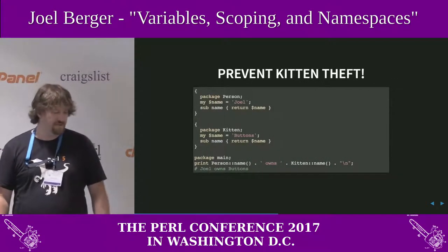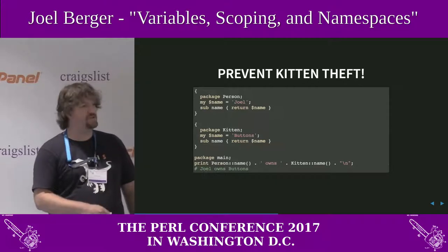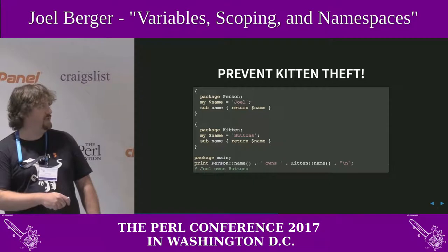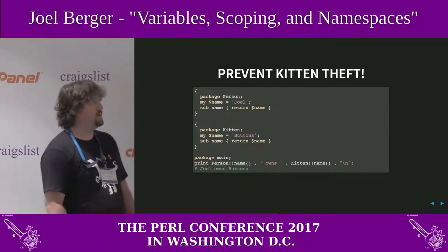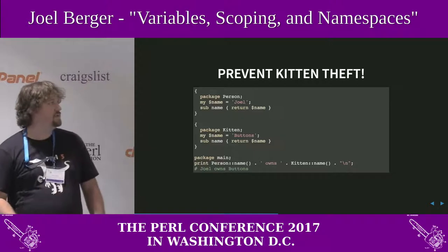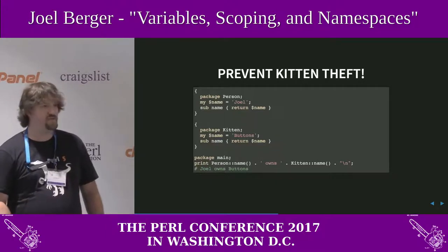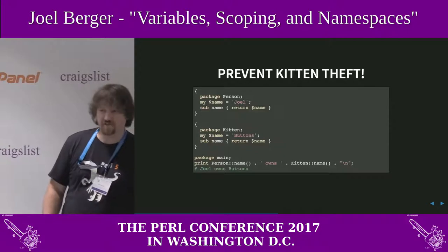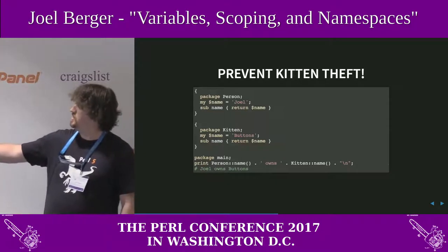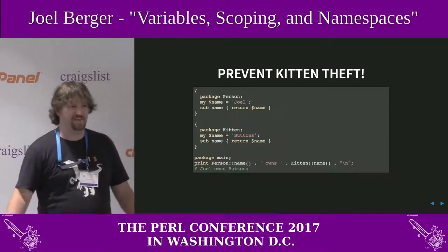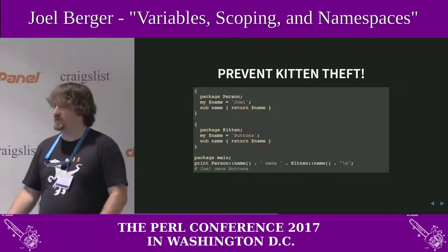Let's go back and prevent that kitten theft. I have my package Person and my name, but now name is declared with `my`. We've got a function `Person::name` which returns that lexical `my name`. The same for kitten. Now when we do that same thing of printing out who owns Buttons, there's nothing Doug could have done — no code he could write outside of these scopes — that would allow him to put his name there.